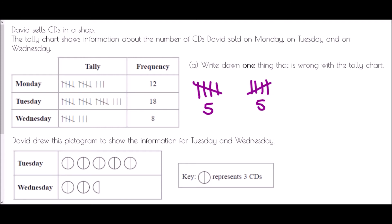So in the Monday group we have five and then another five and then another three. So five plus five plus three is thirteen. But it says here that the frequency is twelve. So that is certainly something that's wrong. The frequency there should be thirteen. If we check it for the others, we've got five and five and five and three. Five plus five plus five is fifteen, plus three is eighteen. So that's great. And then we've got five followed by three. Well five and three is eight. So that bit's fine. So the only thing wrong with it actually is the frequency for Monday.